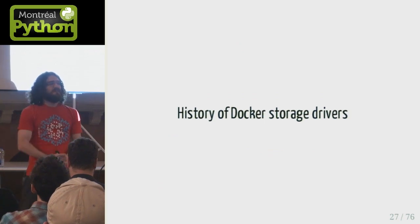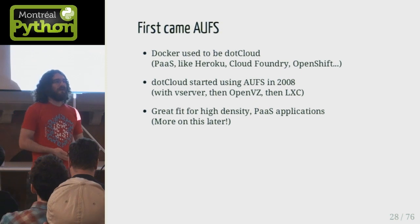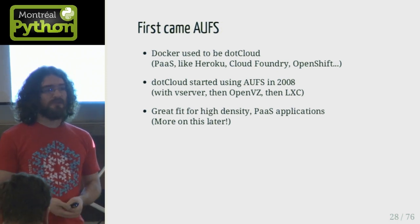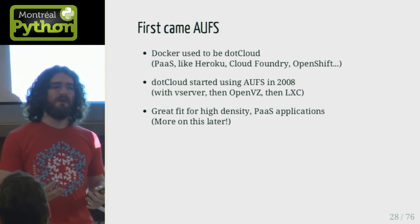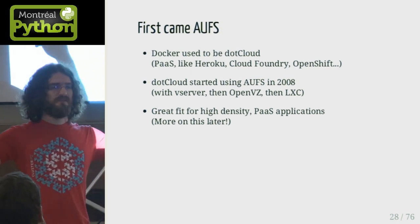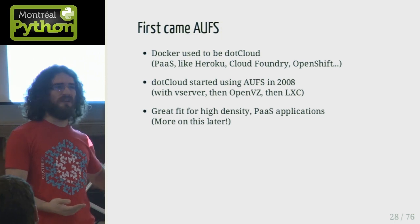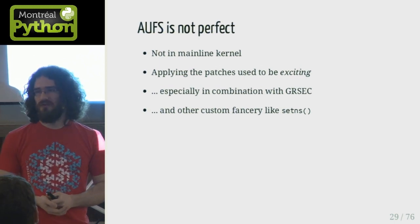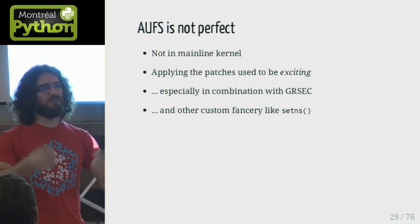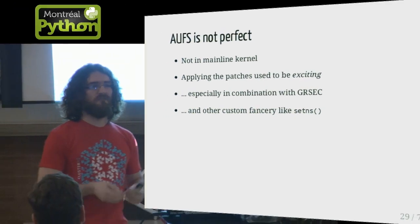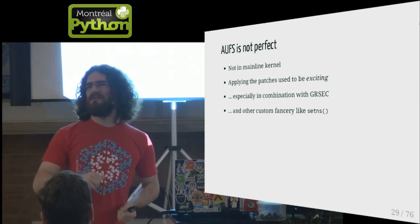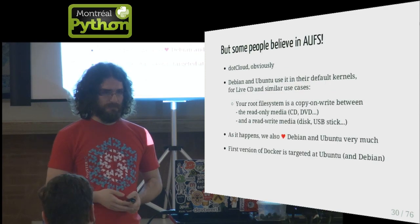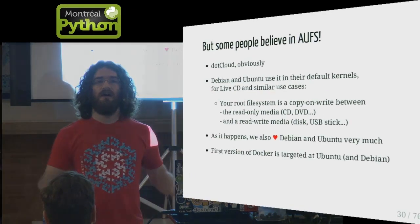Now let's talk about Docker storage drivers. When we first released Docker, we only had support for one specific copy-on-write system called AUFS. That was because it was what we used in dotCloud — we had lots of experience with it, it worked, and we had been running hundreds of containers on a single machine with it. The problem is that AUFS is not in the mainline kernel. If you get the source from ftp.kernel.org and compile it, there's no AUFS — you have to download and apply manual patches on top, plus security and custom patches. So maintaining the dotCloud kernel was complicated.